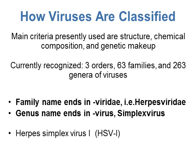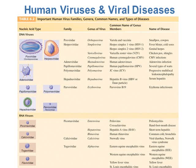Herpes simplex virus 1 is found in the Herpesviridae family, in the Simplexvirus genus. Different types are usually identified with Roman numerals — 1, 2 — or by other chemical compositions. Table 6-2 in your book is a really good table that classifies viruses important for human diseases, including DNA viruses causing diseases like smallpox, cowpox, cold sores, and genital herpes.